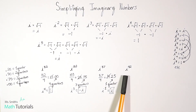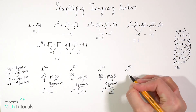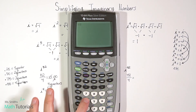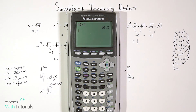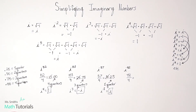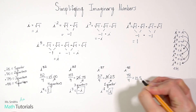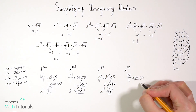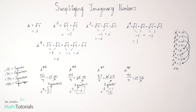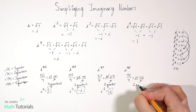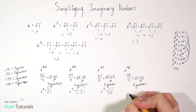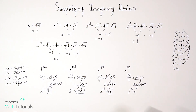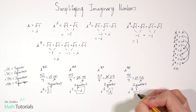Let's do one more: i to the 42nd power. 42 divided by four gives us 10.5. We don't care about the 10 — only the decimal. 0.5 is 50 cents, which is two quarters, corresponding to i squared. And i squared is just negative one. So i to the 42nd power reduces to negative one.